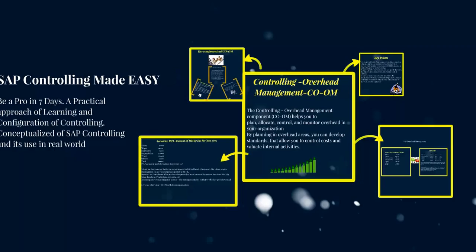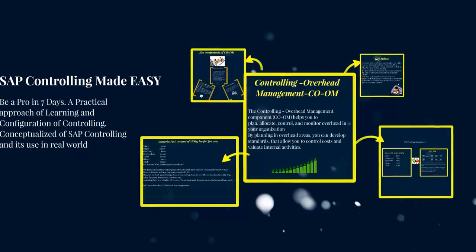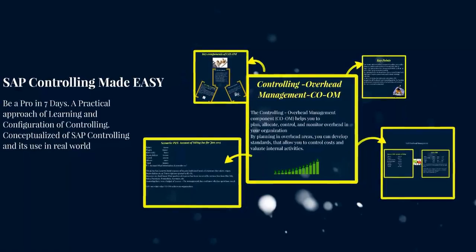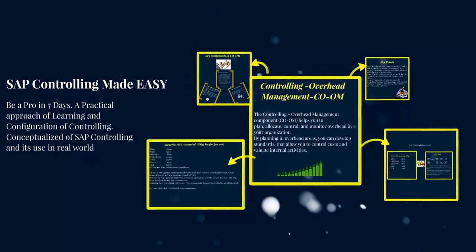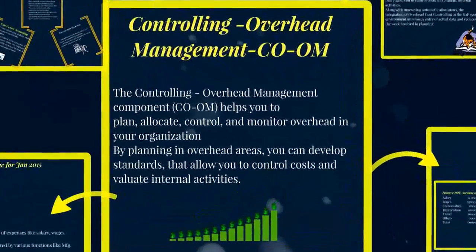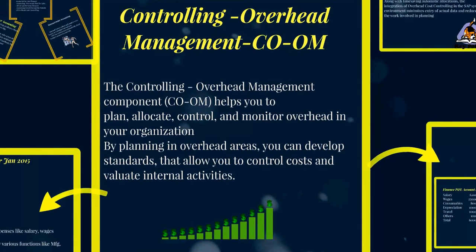It is very important to understand how we use the overhead management component of controlling. The Controlling Overhead Management, or COAM, helps you to plan, allocate, control, and monitor overhead in your organization. By planning in overhead areas, you can develop standards that allow you to control costs and evaluate internal activities.